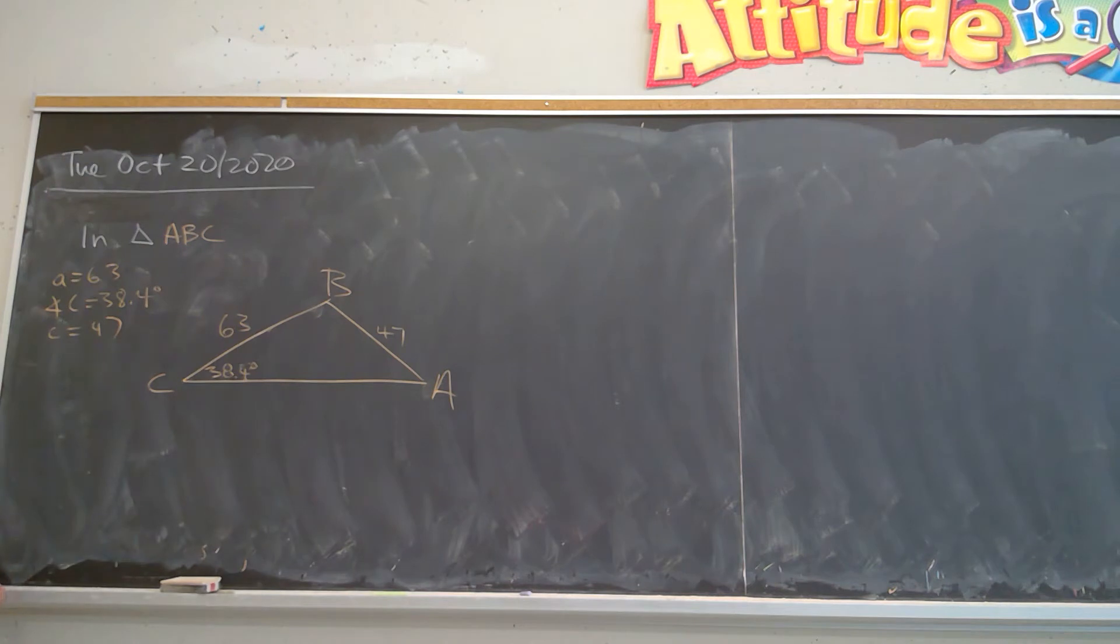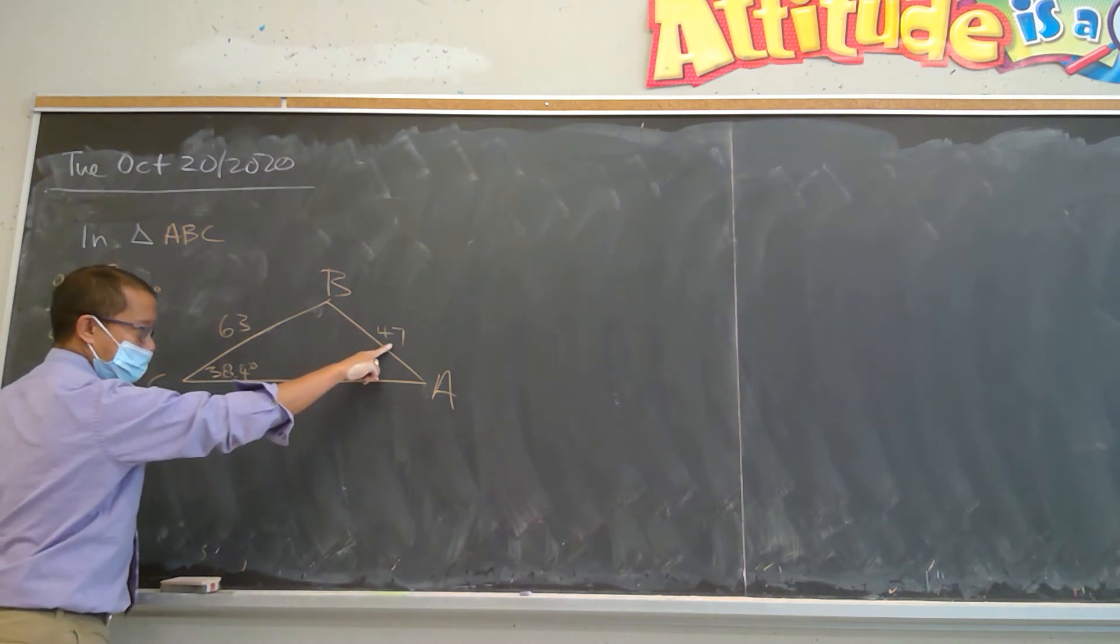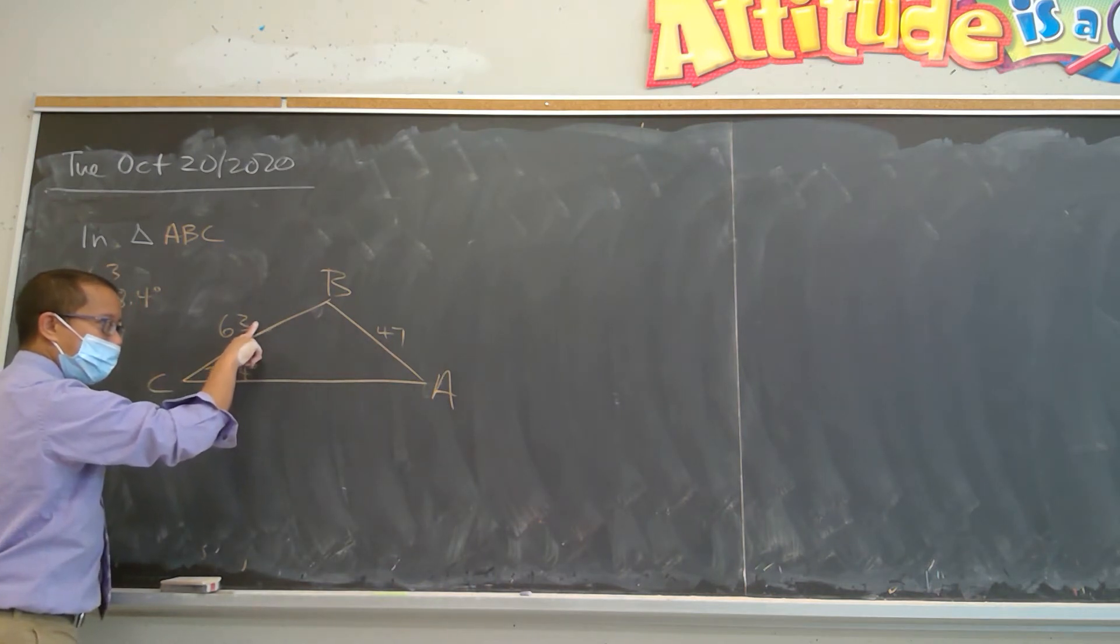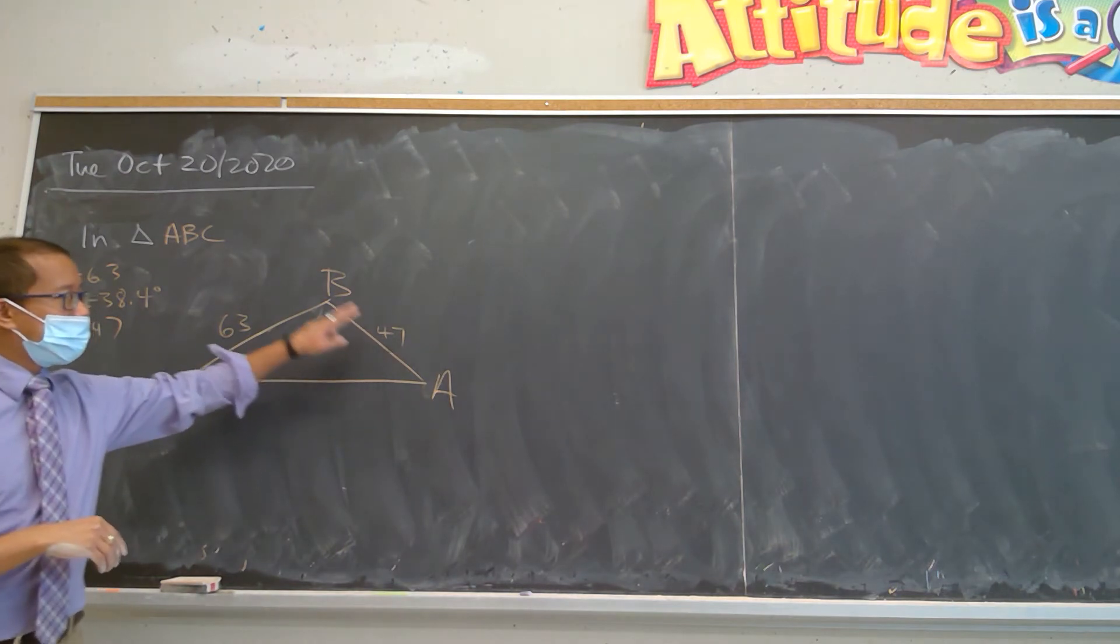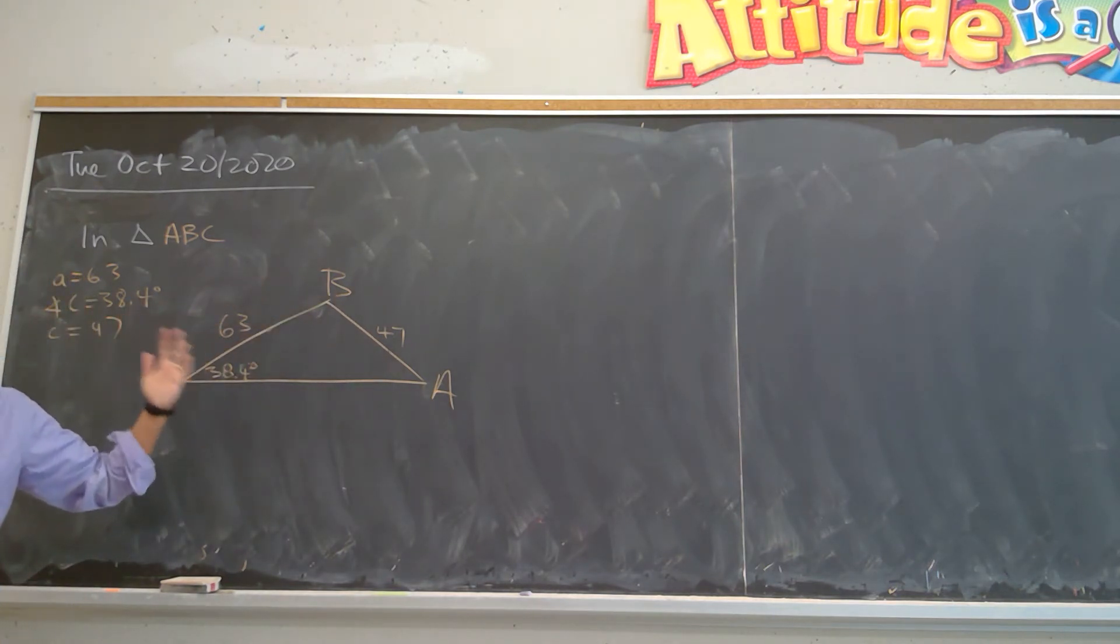So we'll talk about this again really quickly. Everybody agree that side C is smaller than side A, right? So when this side is smaller than this, I always check against the height.